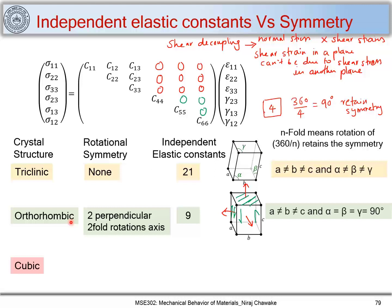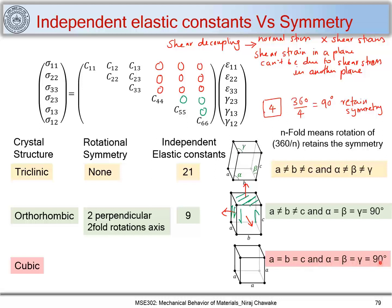Now let us consider the cubic crystal structure, defined as a = b = c and α = β = γ = 90°. It has 4 three-fold rotational symmetry axes along the body diagonals of the cube. There are 4 body diagonals, and each has three-fold rotation symmetry.